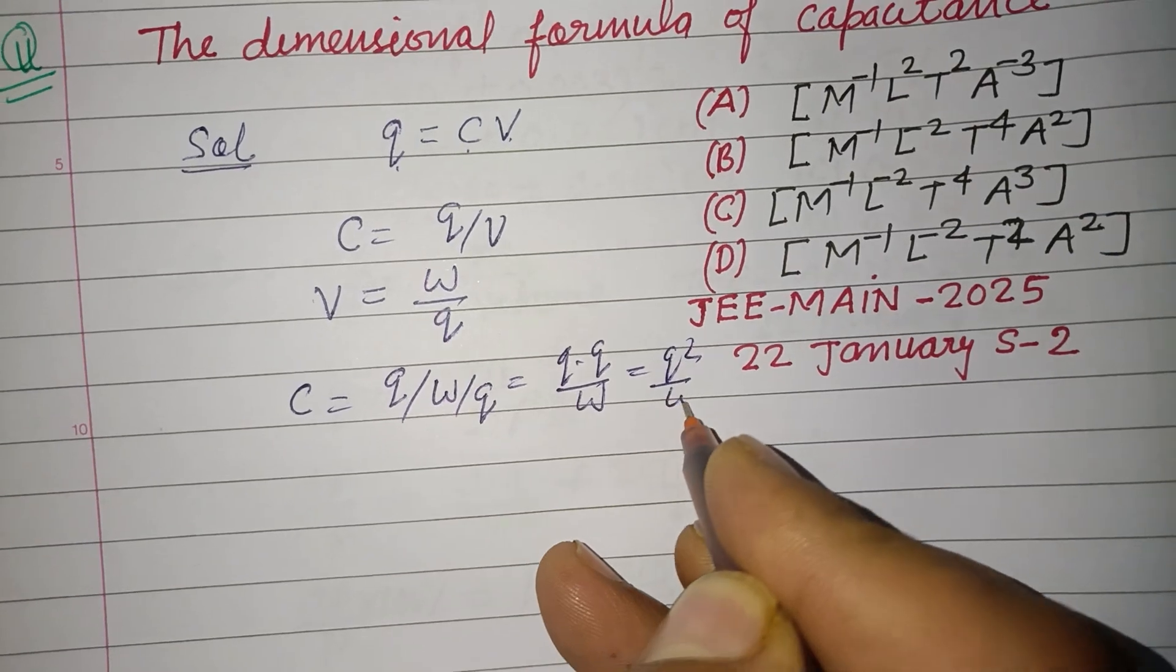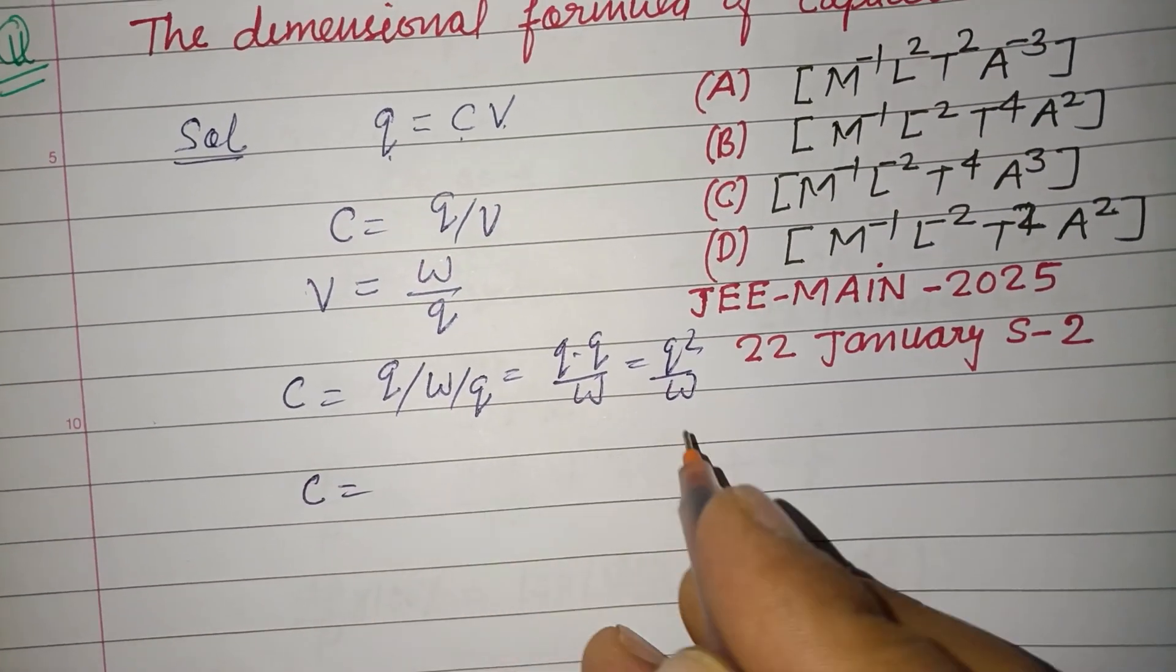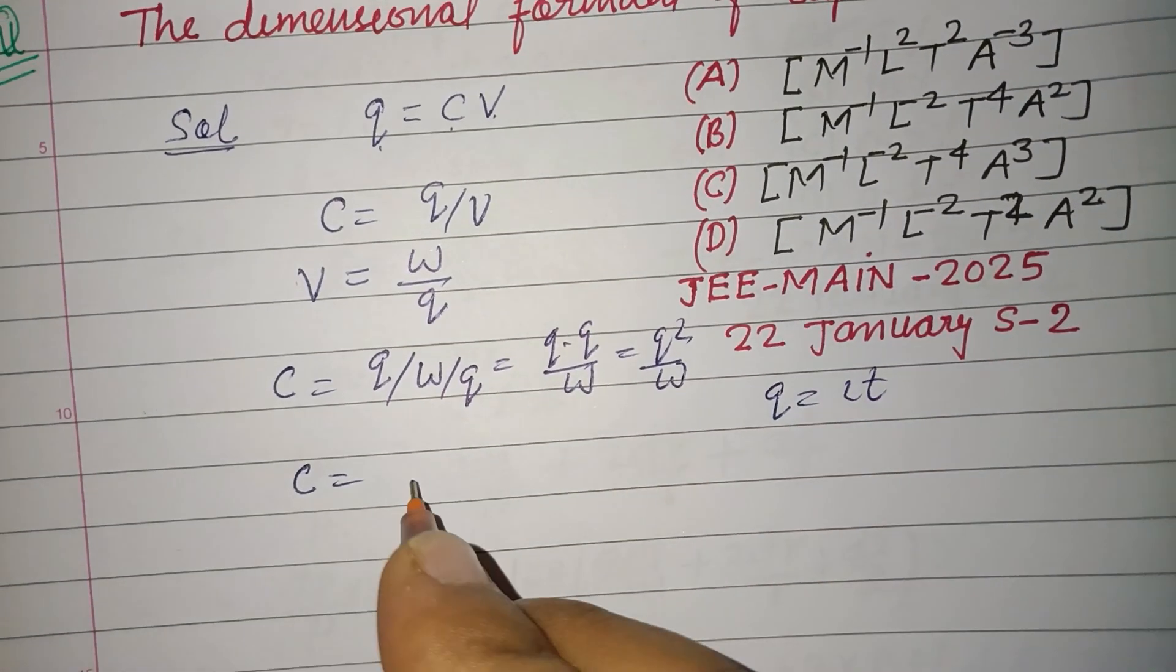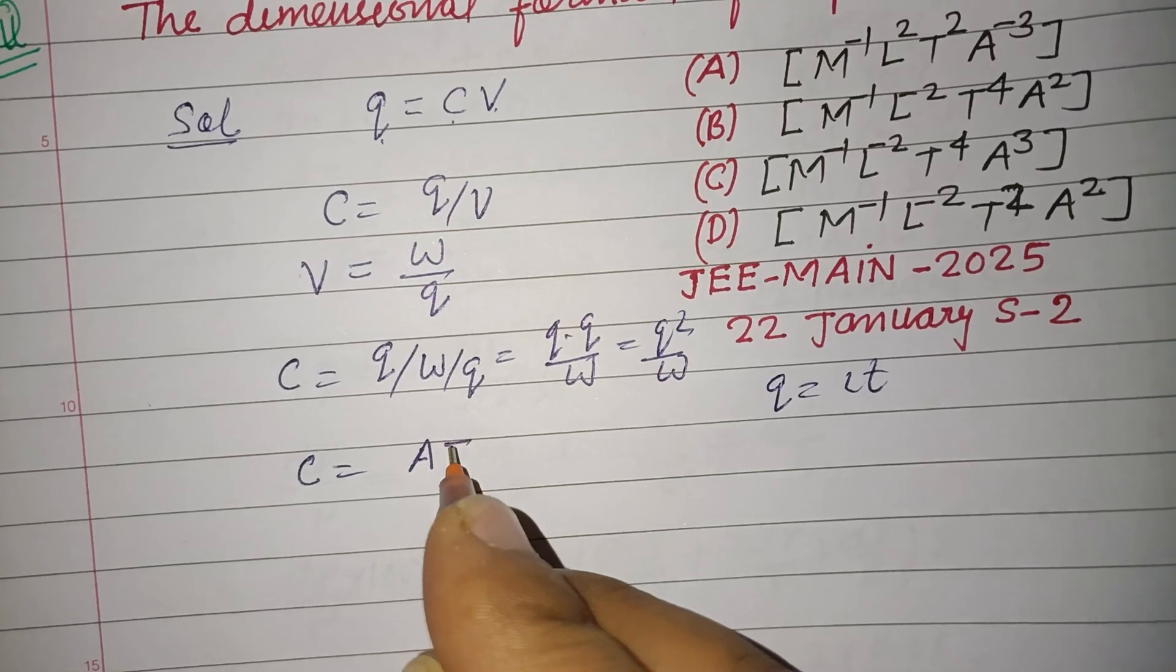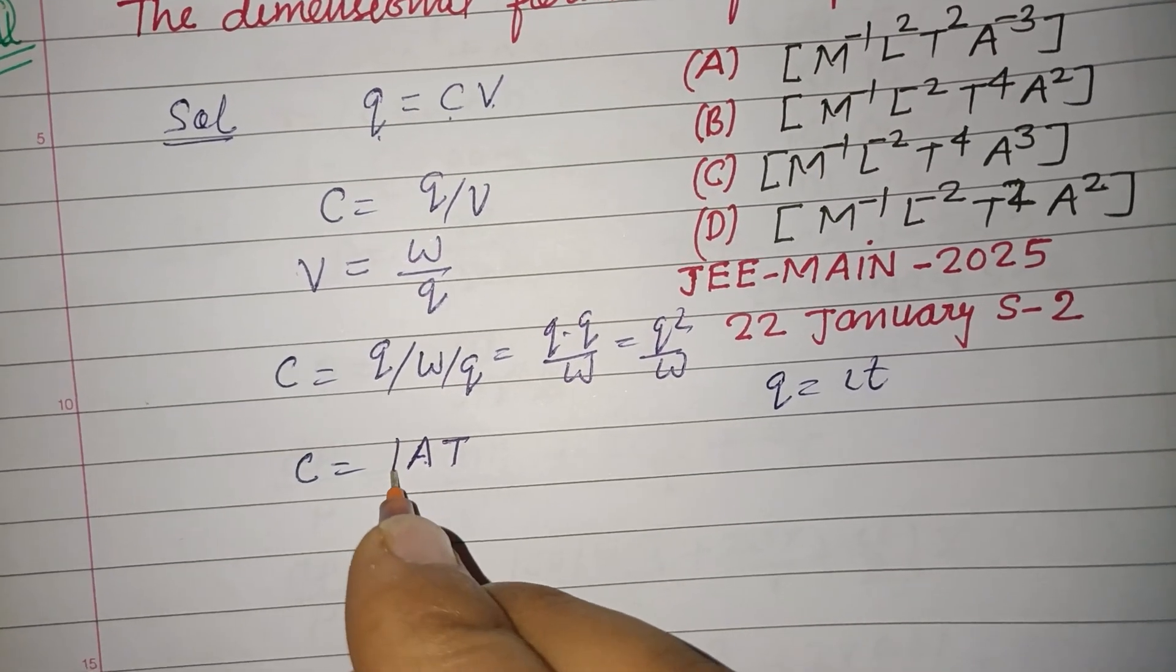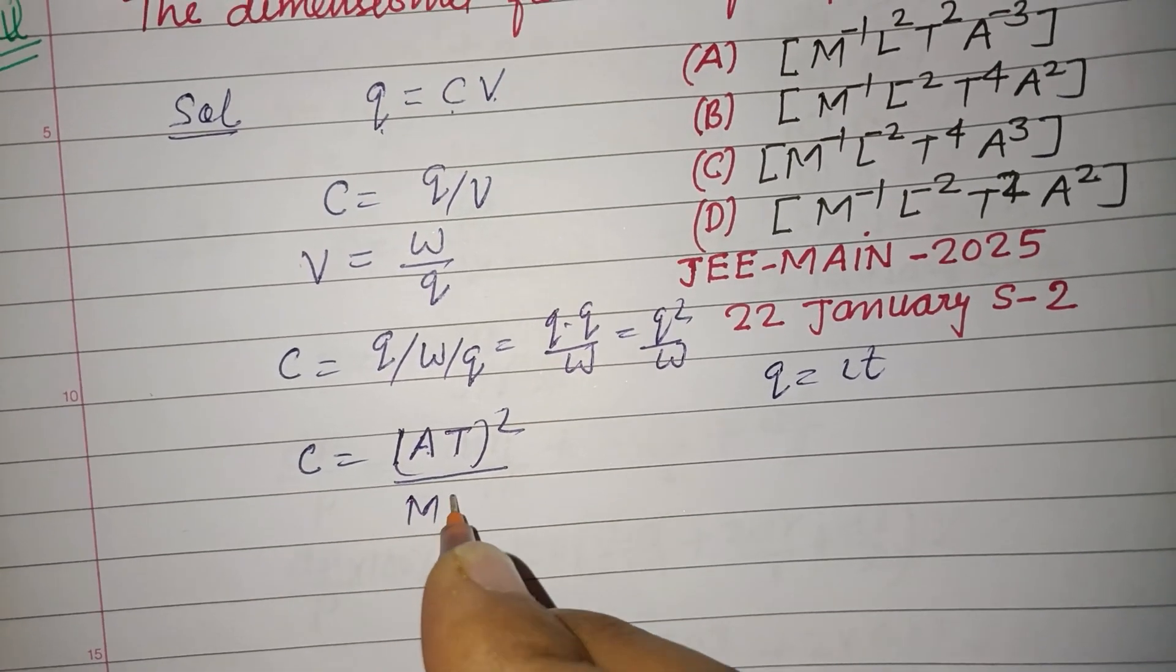So W is work, q is charge. You know that q equals IT, so its dimension - dimension of current is A and time is T. So AT squared over dimension of work is ML squared T minus 2.